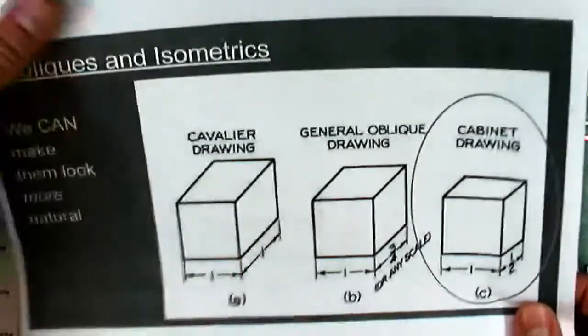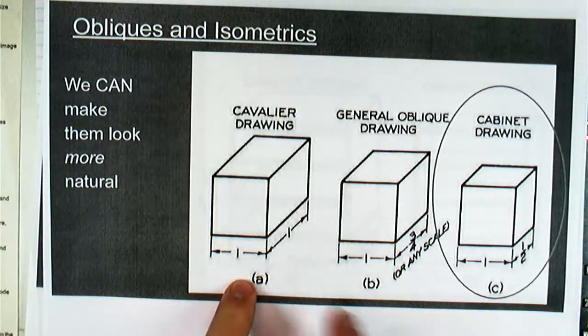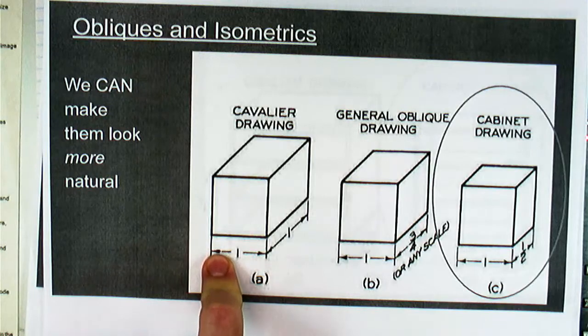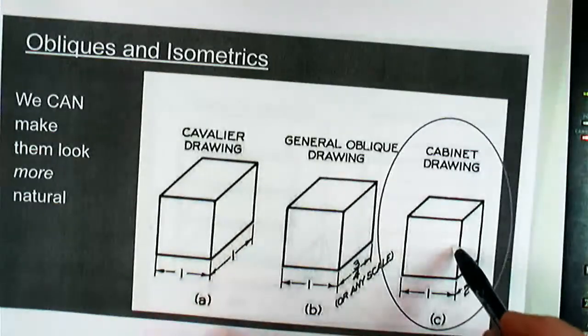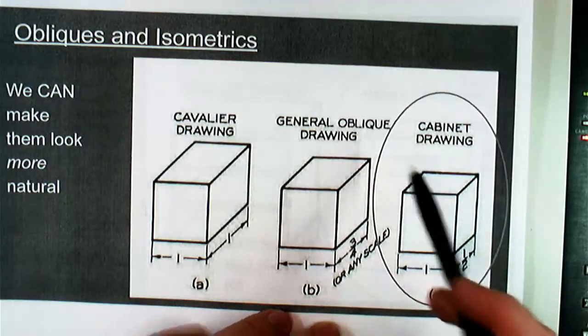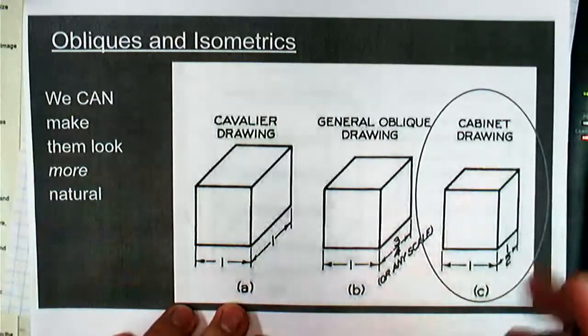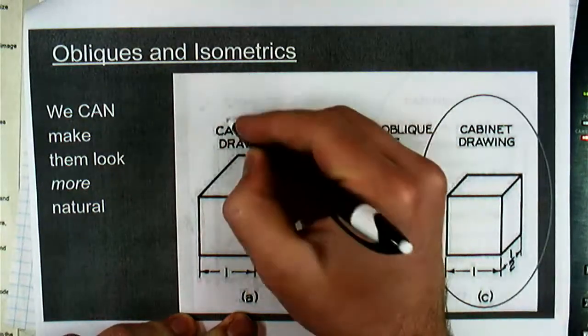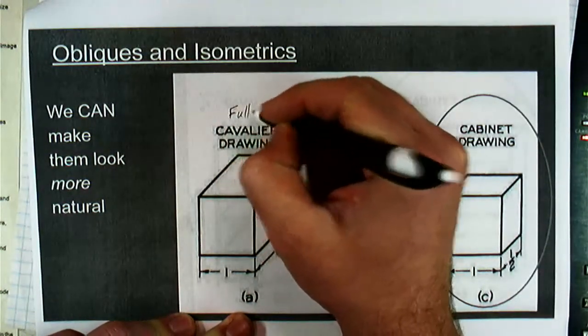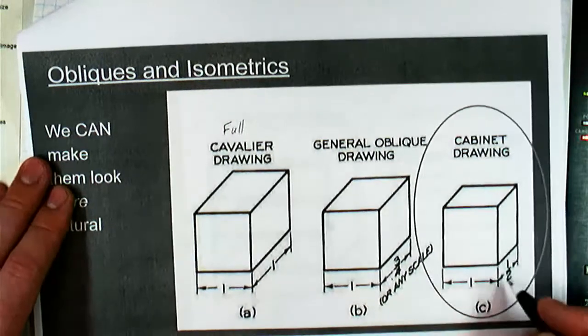So just some other things to note. We will be drawing cabinet obliques. They're called cabinet obliques because obliques can look really unnatural. That's what we kind of see here back with this house is this thing looks super weird. Like, what's going on there compared to the isometric? But if we do it in the style of a cabinet oblique instead of a cavalier or a full oblique is another way to call it, it looks a lot better. We probably will stay away from the three-quarter oblique. We'll just stick with half scale.